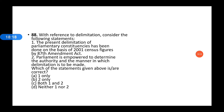Next question: With reference to delimitation, consider the following statements. Which of the statements given above are correct? The first statement — the present delimitation of parliamentary constituencies has been done on the basis of the 2011 census figure by the 87th Amendment Act — is wrong. The correct statement is that it was done on the basis of the 2001 census figure by the 87th Amendment Act.